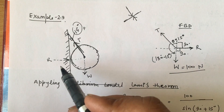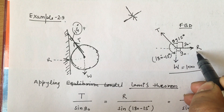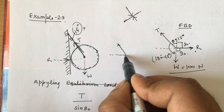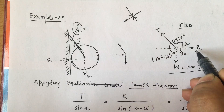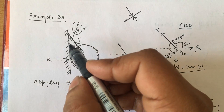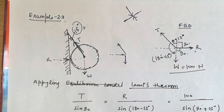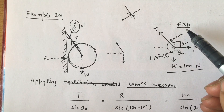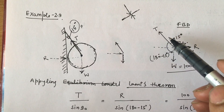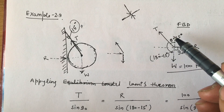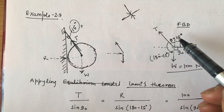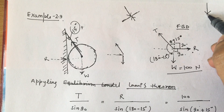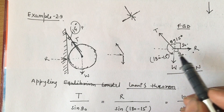We can apply the principle of transmissibility. The angle given is 15 degrees, and from that the other angles can be calculated easily. In the free body diagram, the string always carries tensile force — a string cannot handle compression. W always acts vertically downward. So we have three forces: T, R, and W.